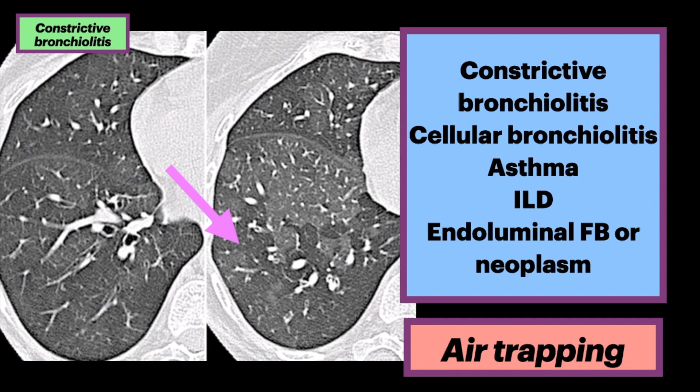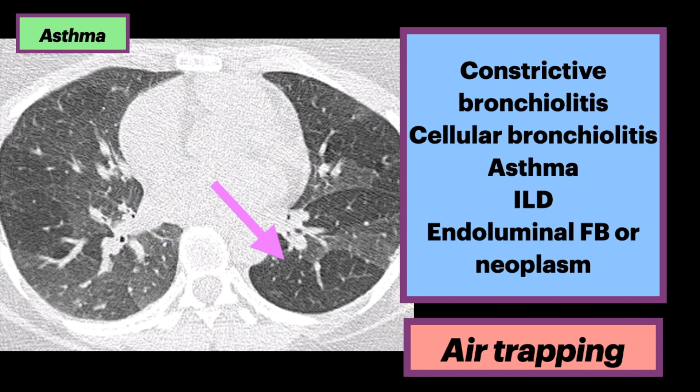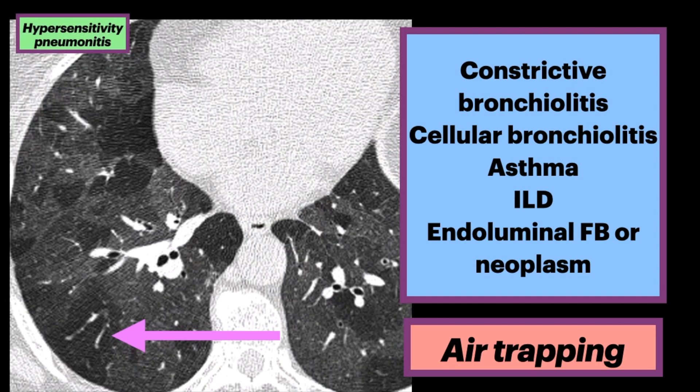On the left, we see a composite image showing inspiratory and expiratory views. This patient had constrictive bronchiolitis and shows subtle mosaic attenuation on inspiration and frank air trapping on expiration. Here's a patient with asthma — note the areas of air trapping. In this patient with hypersensitivity pneumonitis, there are multiple foci of hyperlucent lung due to expiratory air trapping.